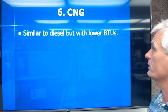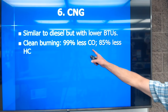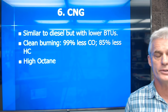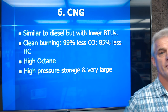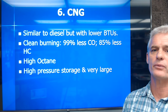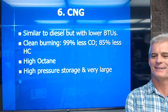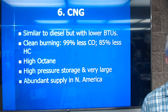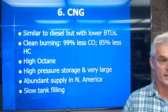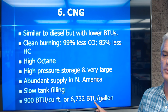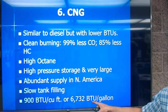Compressed natural gas is very similar to diesel but has a lower BTU amount. It's very clean burning — about 99% reduction in carbon monoxide and 85% less HC. It has very high octane, so it works really well in high compression engines. However, it must be stored under high pressure, requiring very large tanks. The school district had CNG buses and got such poor fuel economy that they stopped rating them in miles per gallon and started rating them in gallons consumed per hour. It's really abundant in North America so it's not expensive, but it has a bunch of problems — we just don't have a lot of energy per unit, so we have to have a huge tank and burn a ton of it. It's also very difficult to fill because of the high-pressure filling process, and it has only 900 BTUs per cubic foot or 6,700 BTUs per gallon.